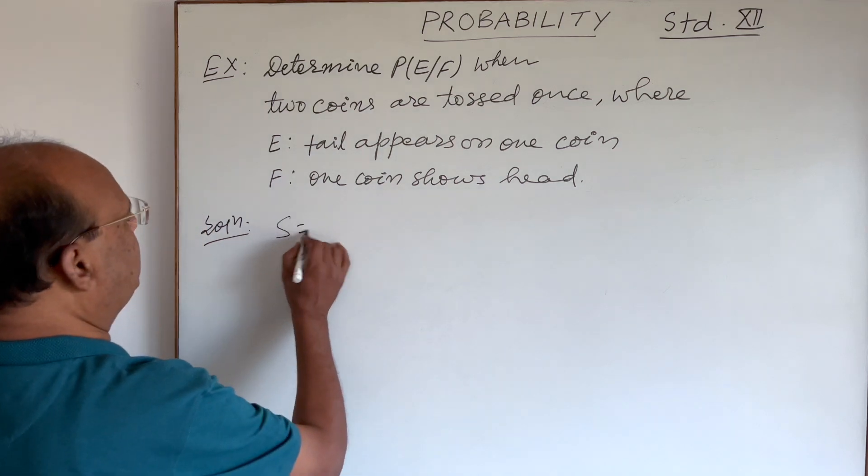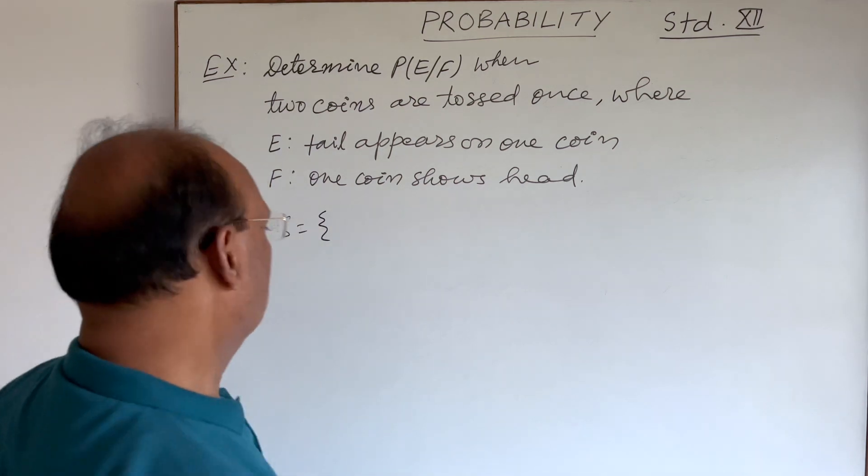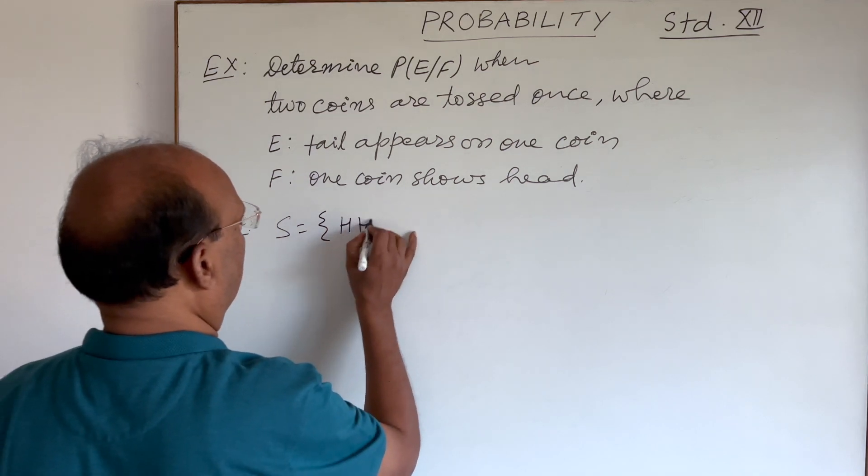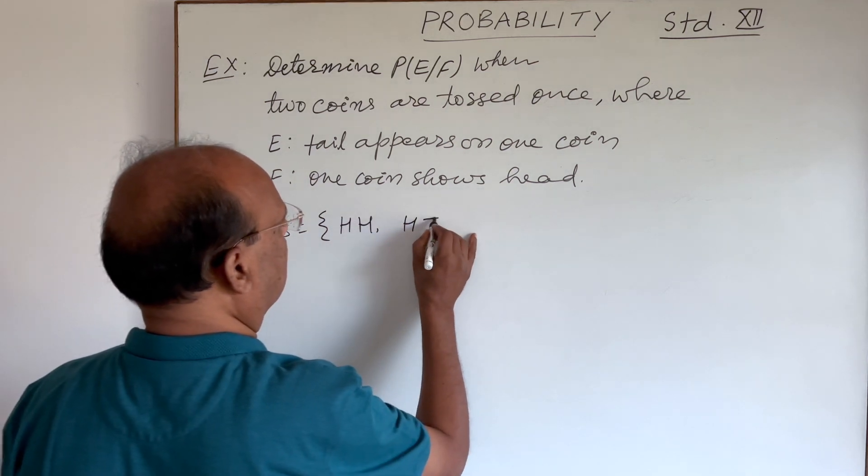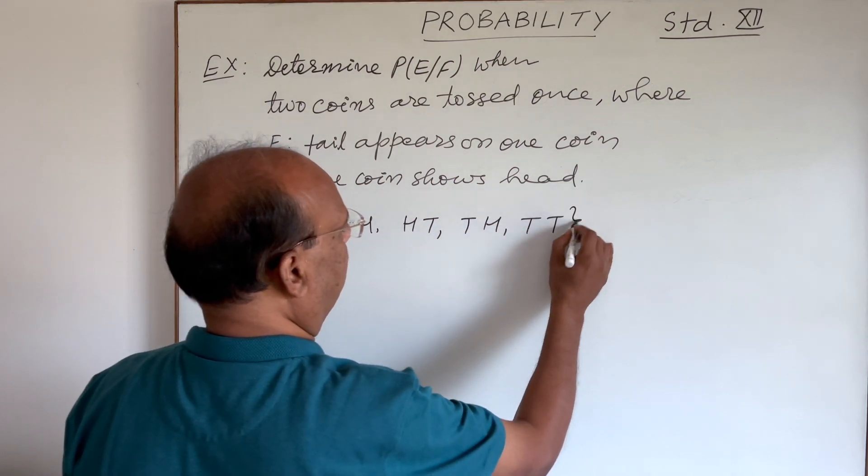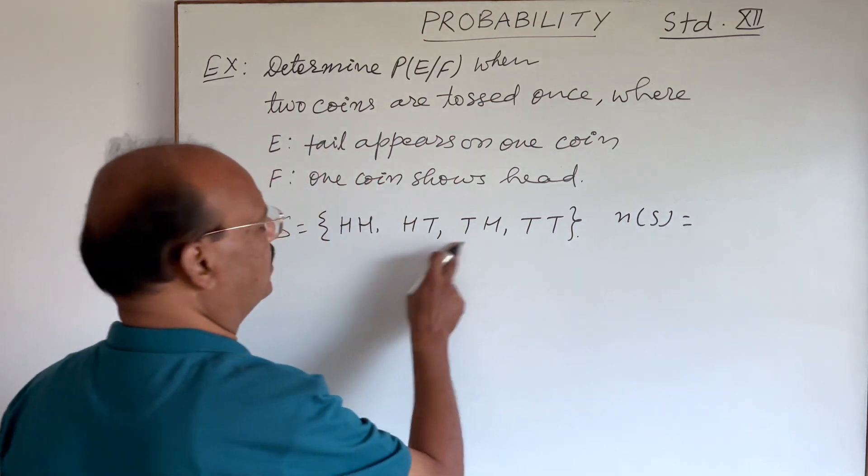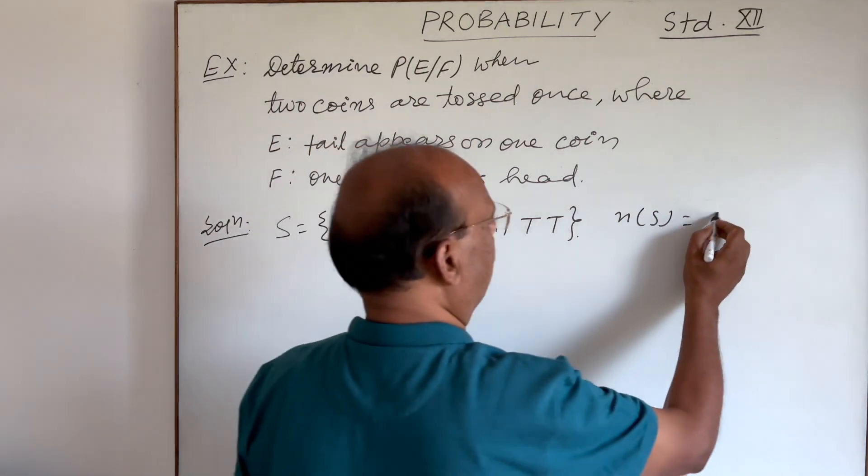So what will be sample space here? When two coins are tossed together, this will be HH, HT, TH, and TT. So here n(S), number of elements in this sample space is 4.